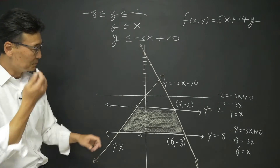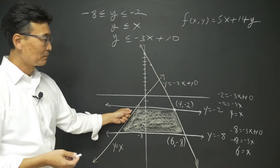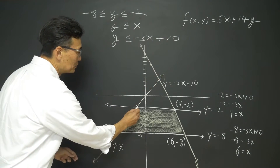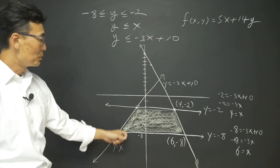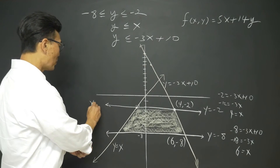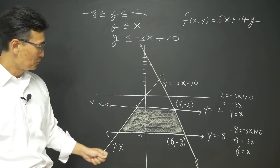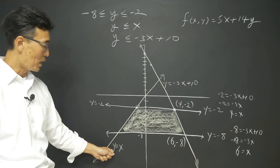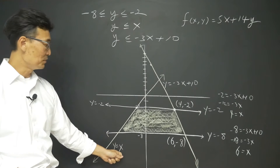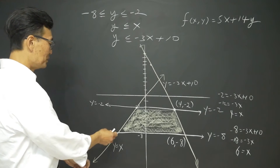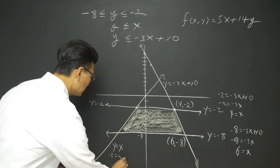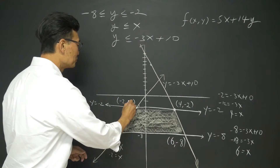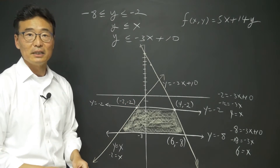Let's find the other two. This point is on the line y equals x. Remember, this line has the equation y equals negative 2. So if y equals negative 2 and y and x are equal to each other, then negative 2 equals x. The coordinate of this point is negative 2 comma negative 2.